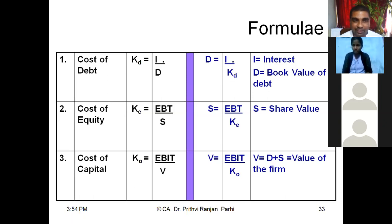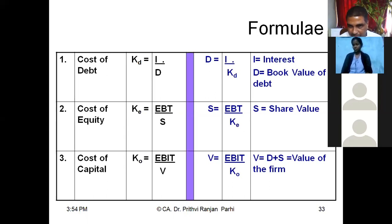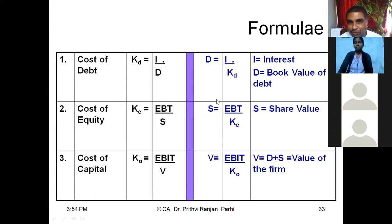Second, cost of equity: Ke = EBT / S, where EBT is earnings before tax and S is the value of equity (shares). From this, S = EBT / Ke. These concepts will be clarified further when we complete this chapter and study the cost of capital in the next chapter.